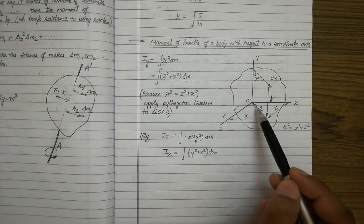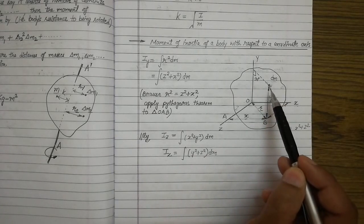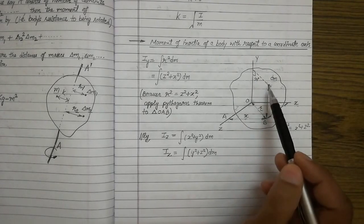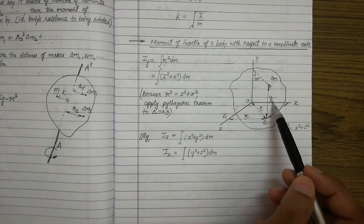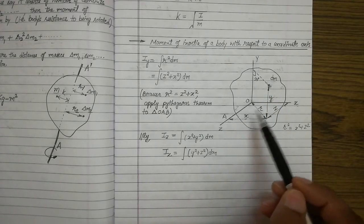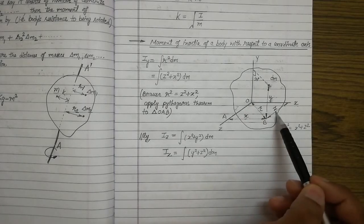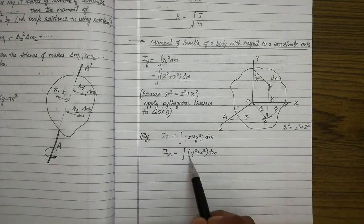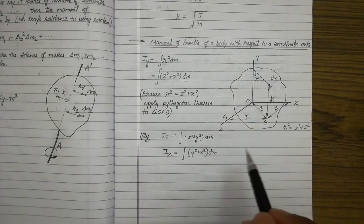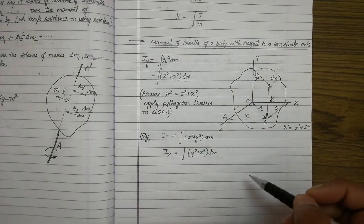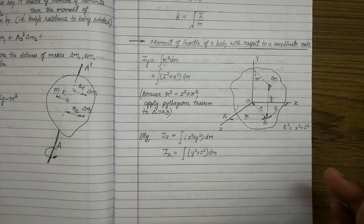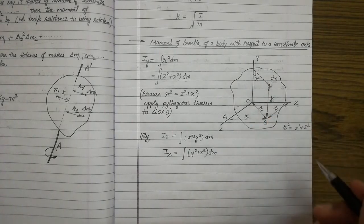For the moment of inertia along the x-axis, we consider the distances of the small element from the y-axis and z-axis, which are y and z respectively. So Ix = ∫(y² + z²) dm. These equations should be kept in mind as they will help in finding the moment of inertia of a given body along various axes. Thank you very much.